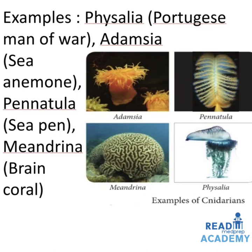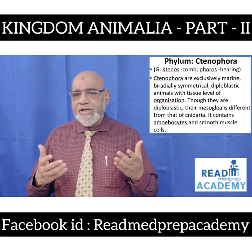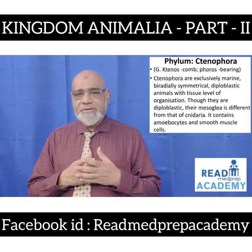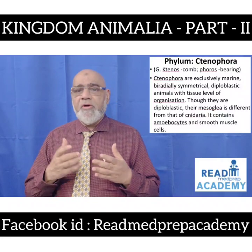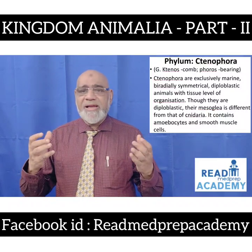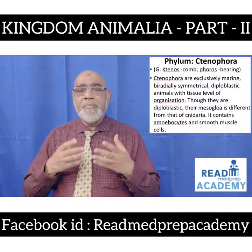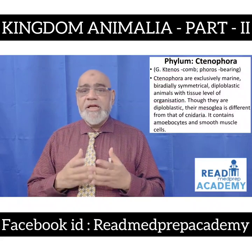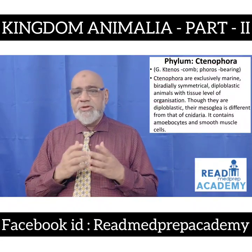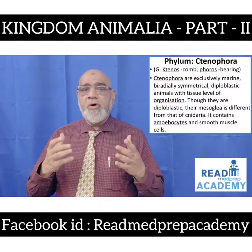Examples of Cnidarians: Physalia (Portuguese man-of-war), Adamsia (sea anemone), Pennatula (sea pen), Meandrina (brain coral). In the images you can see Adamsia, Pennatula, Meandrina, and Physalia. Now let us move on to Phylum Ctenophora — a Greek word; 'cteno' means comb, 'phoros' means bearing.